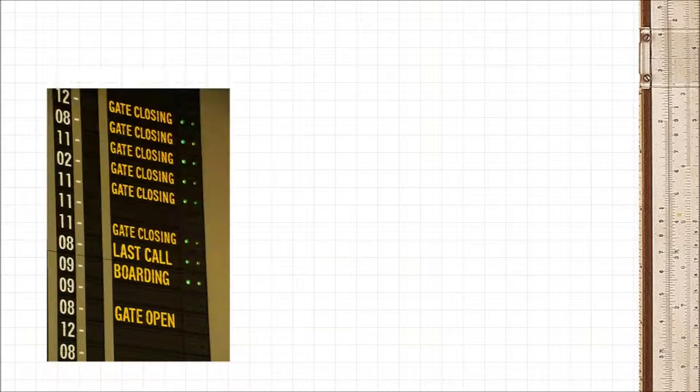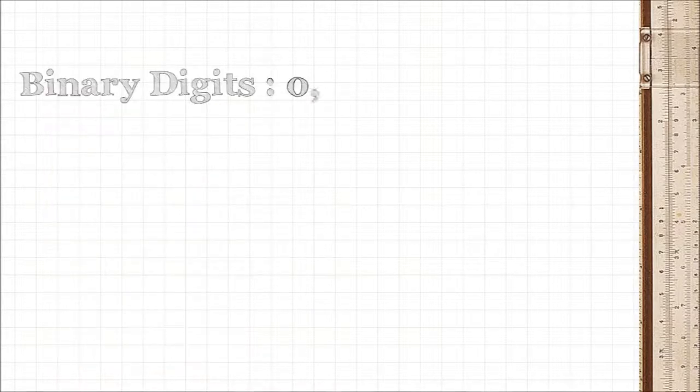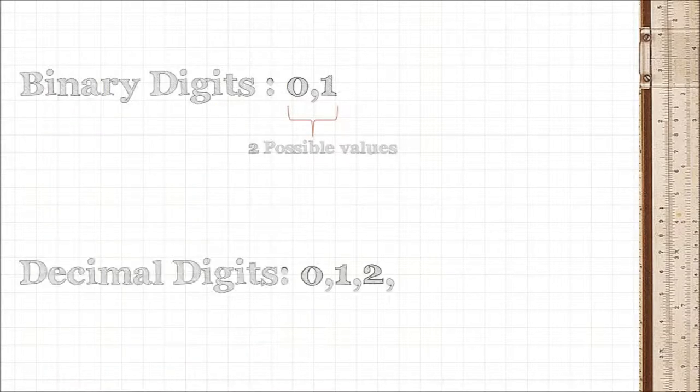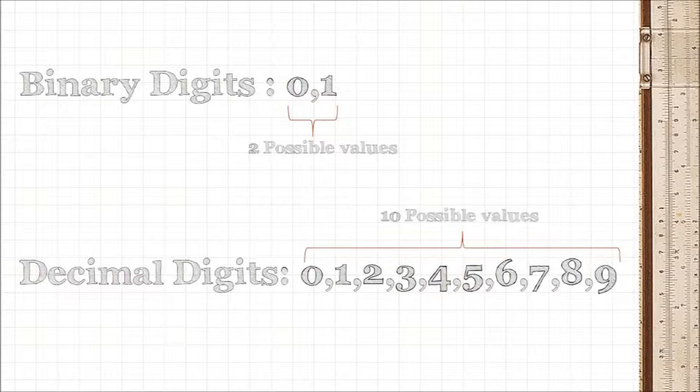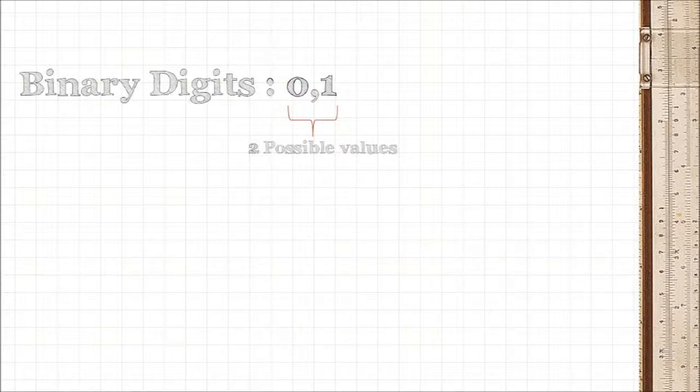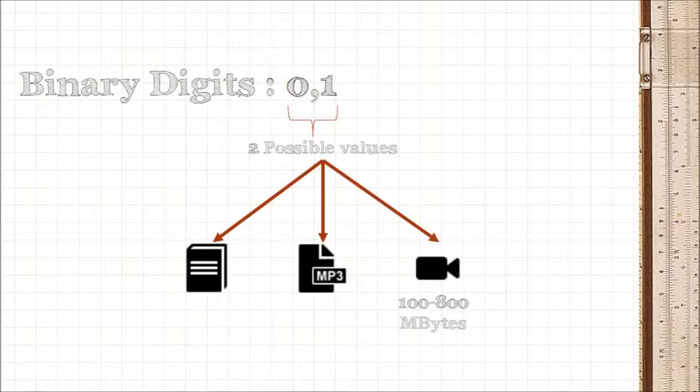But since it can only have 2 possible values, it doesn't really have much capacity to store information. So in order for binary digits to convey information, such as in ebooks, mp3s, or videos, you're gonna need a lot of them. How many?